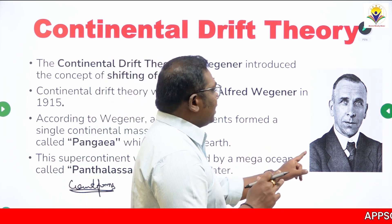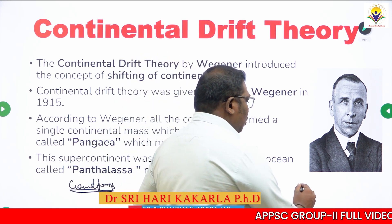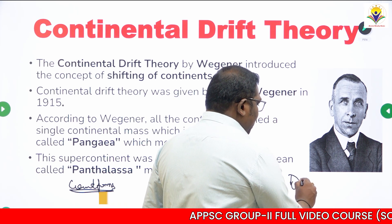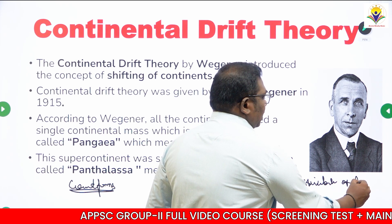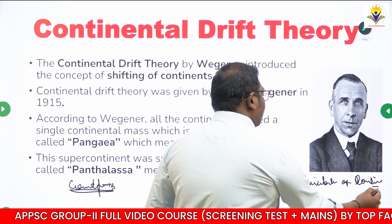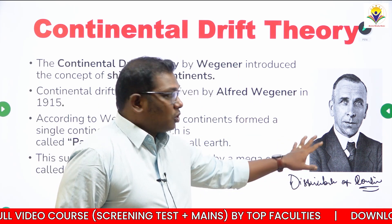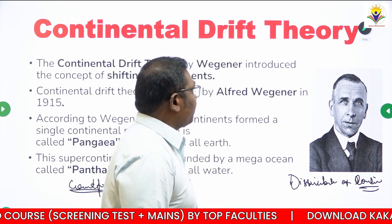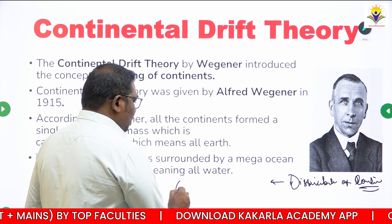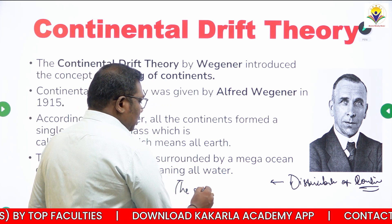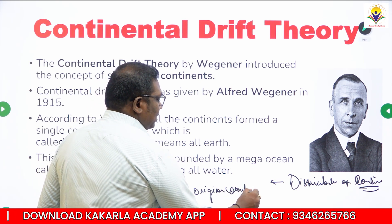Continental Drift Theory was proposed by Alfred Wegener. The major aim of Continental Drift Theory is to show the distribution of continents and oceans. He wrote the book titled 'The Origin of Continents and Oceans.'